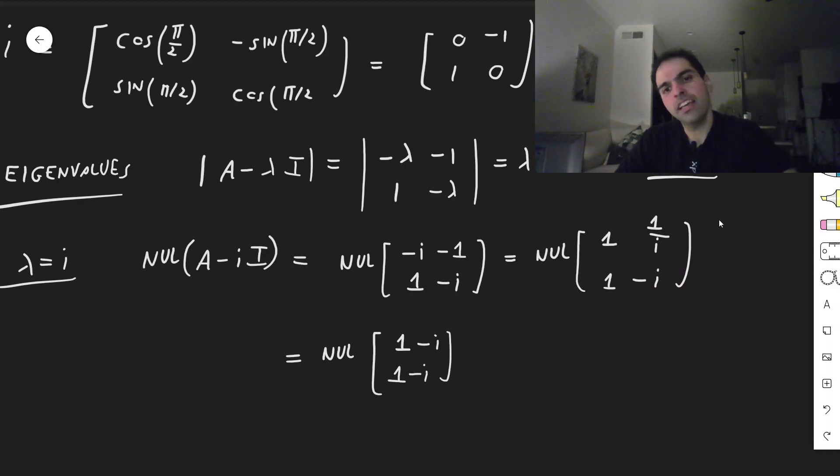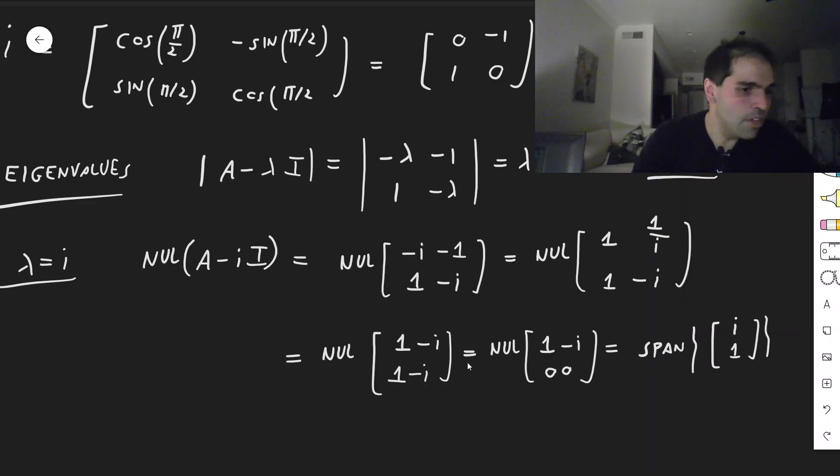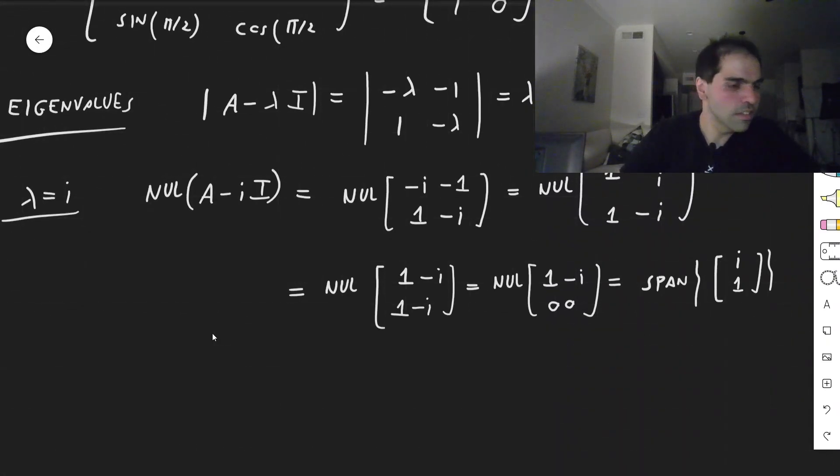And that is the null space of 1 minus i, 0, 0. And then just think, which combination gives you 0? Well, one combination that works is i times 1 plus 1 times minus i. So span of i and 1. So for lambda equals i, you get basically i and 1.